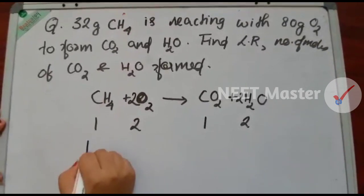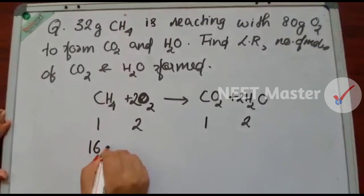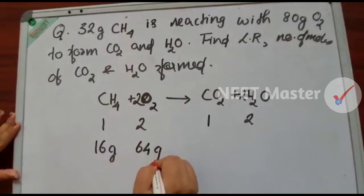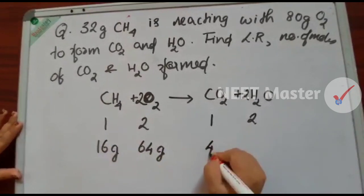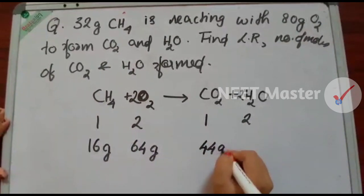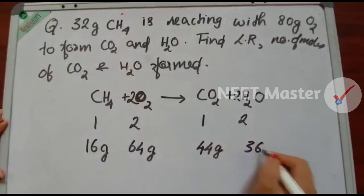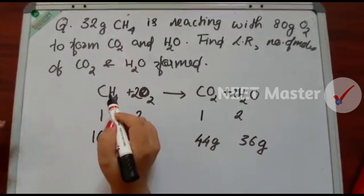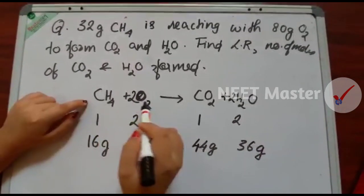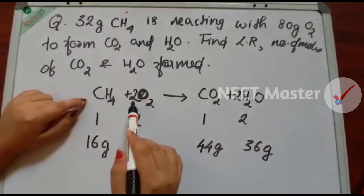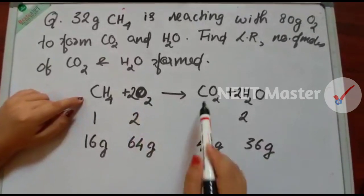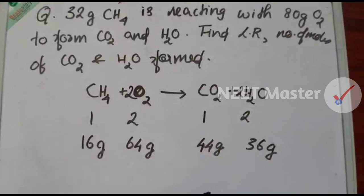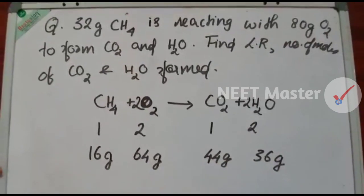I will add: 16 grams of methane plus 64 grams of oxygen gives 44 grams of carbon dioxide and 36 grams of water. I will add the base in the mass. This is not the same — this is 32, 32 into 64, this is 44, this is 18 into 36. It is not the same; it is not the standard condition.